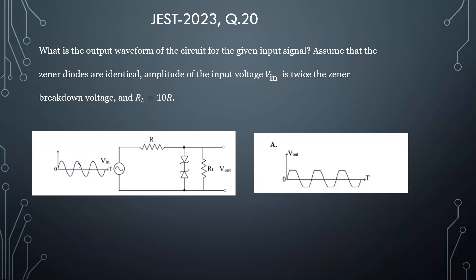Now you can see here we have two diodes, two zener diodes. Say this is zener diode one, this is zener diode two. And the RL value is 10 times the R value, so RL = 10R.